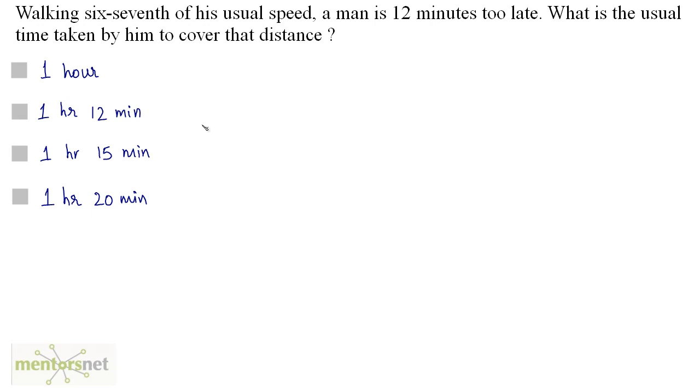Walking at 6/7 of his usual speed, a man is 12 minutes too late. What is the usual time taken by him to cover that distance?